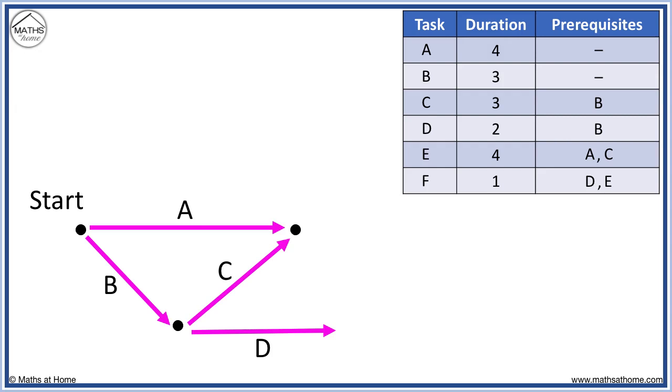Now both prerequisites have combined, we can draw task E. Task F requires both D and E and so we can redraw task E so that it connects with task D before task F is drawn.